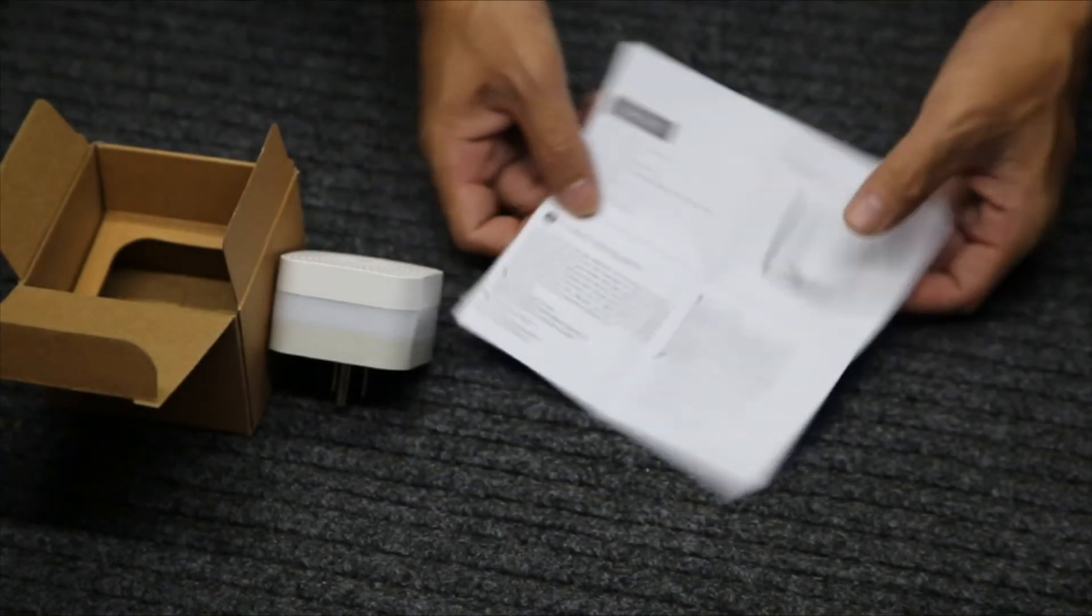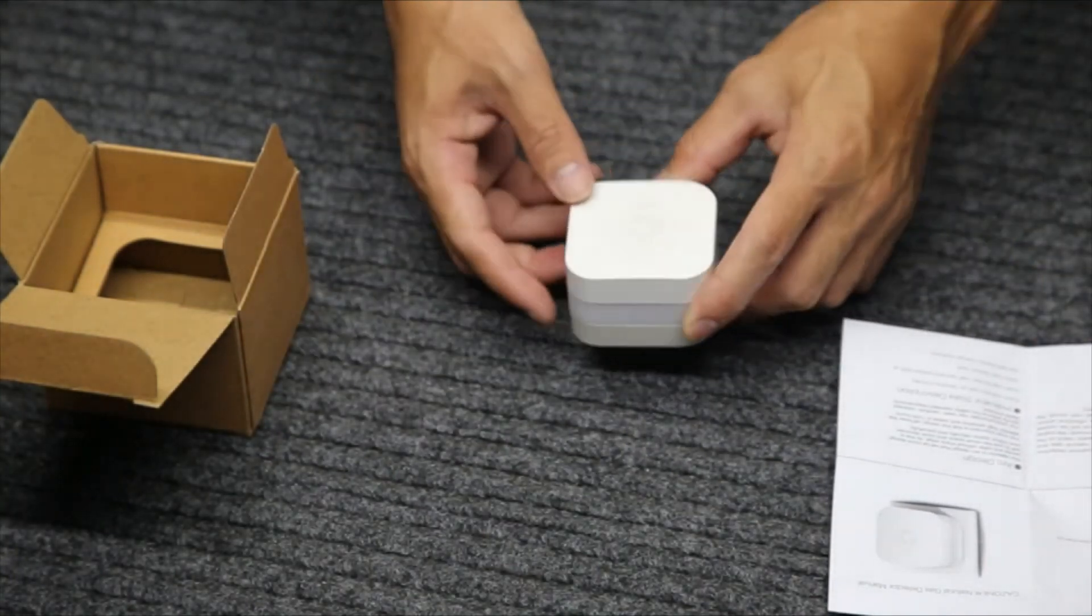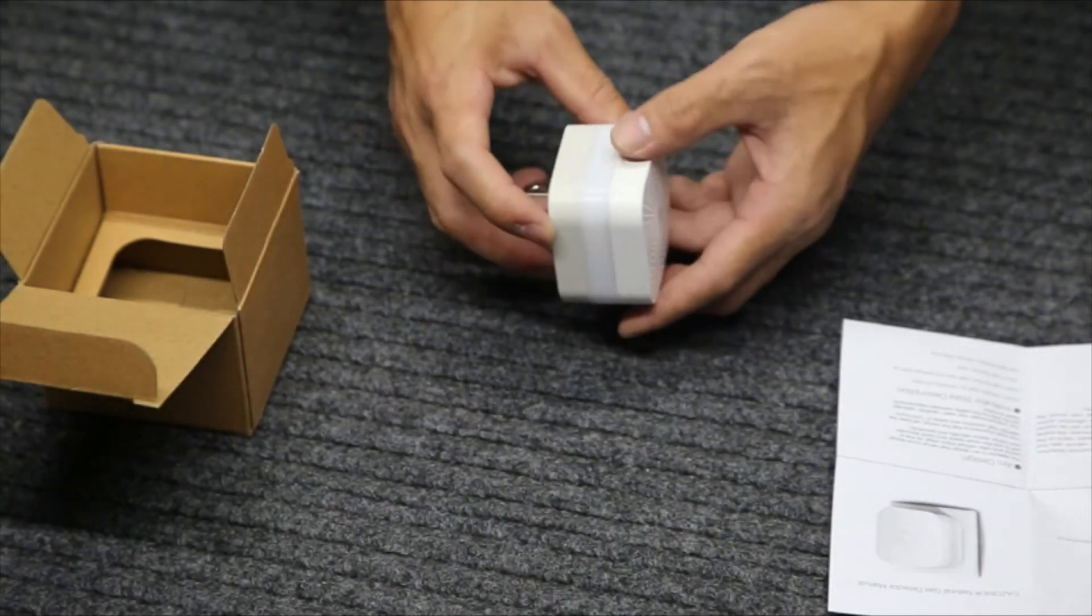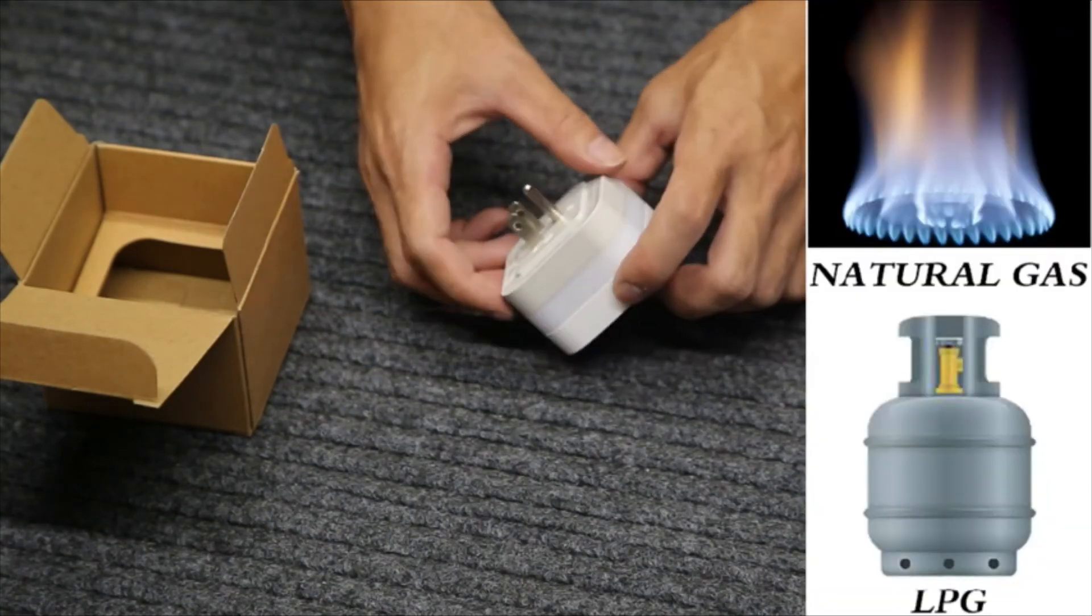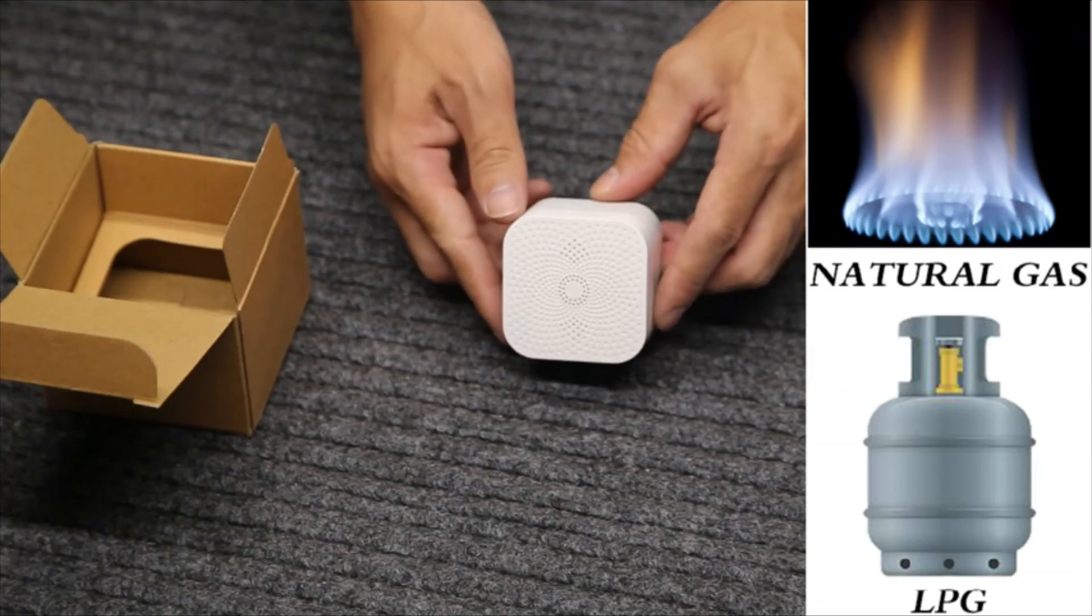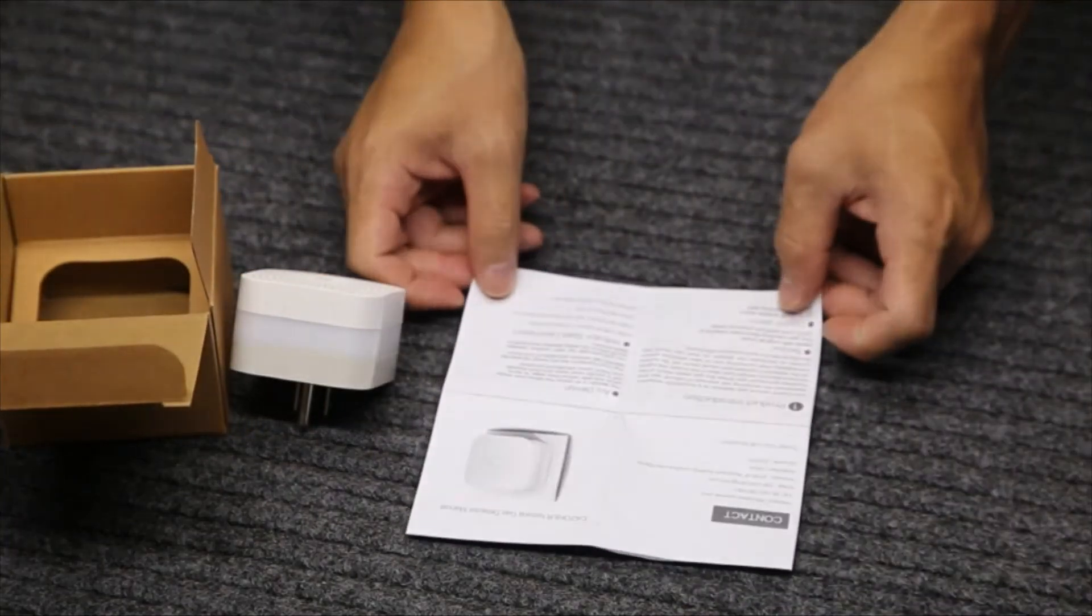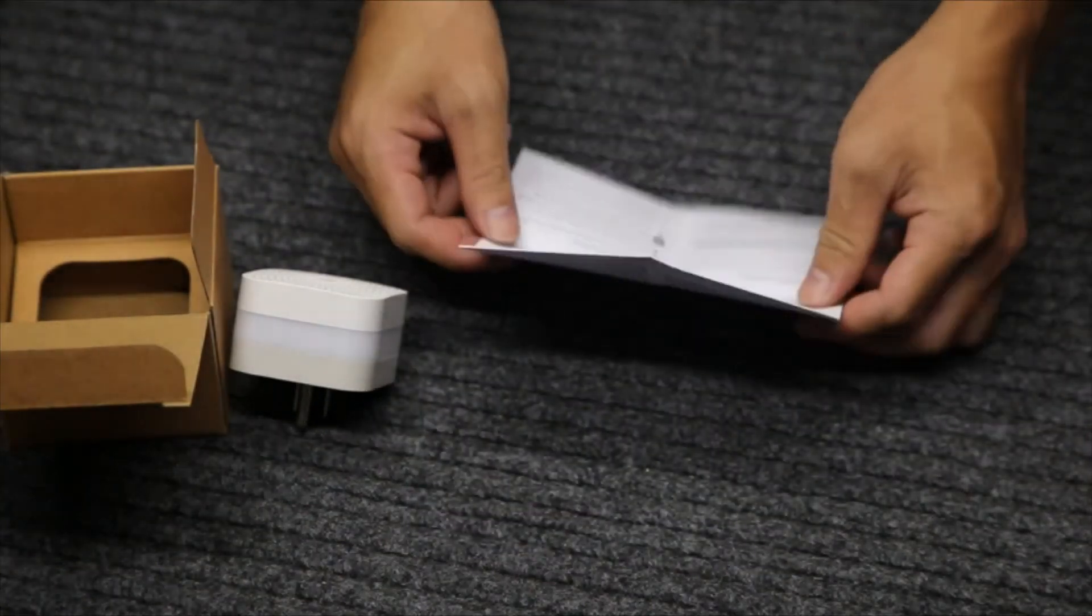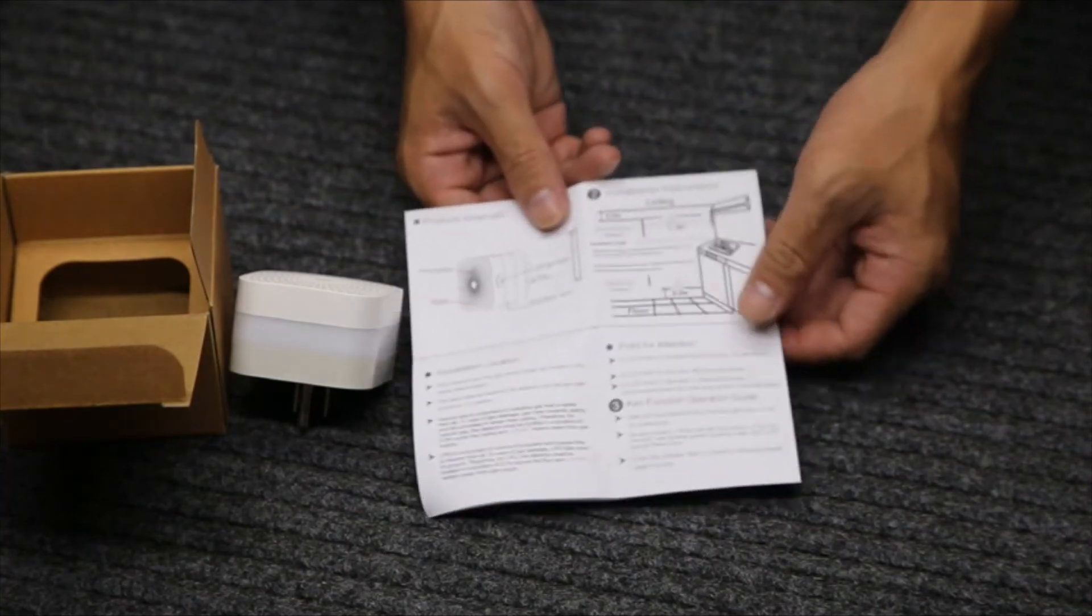So what kind of gas or gases could Kazona gas detector detect exactly? The answer is natural gas and liquefied petroleum gas, normally we just call LPG. The main component of natural gas is methane, while the LPG is propane. Kazona gas detector is mainly sensitive to these two kinds of components.